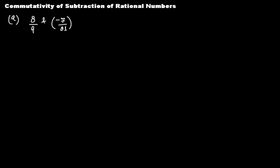It means that if we take two rational numbers a and b, and if we subtract b from a, then the subtraction of these two rational numbers will be commutative if a minus b is equal to b minus a. If this gets satisfied, then we say that yes, the subtraction of rational numbers is commutative. So let's learn whether this is true or not.